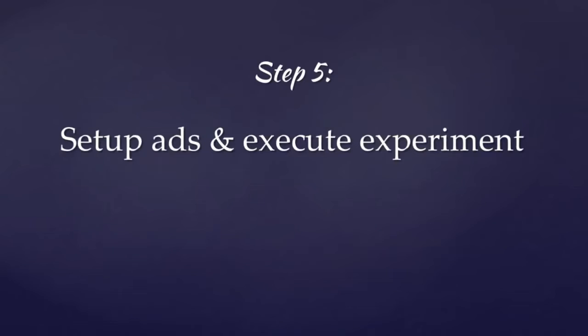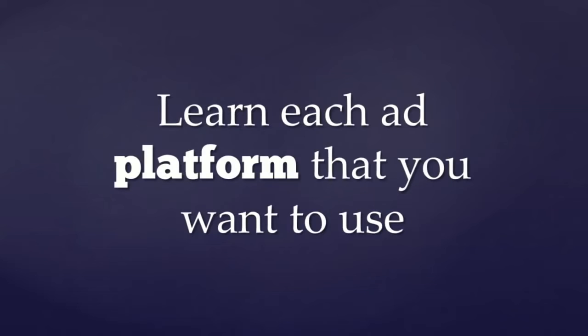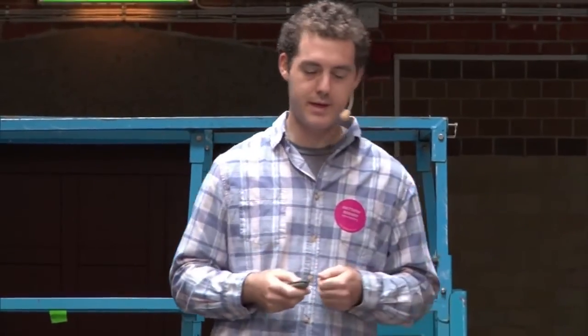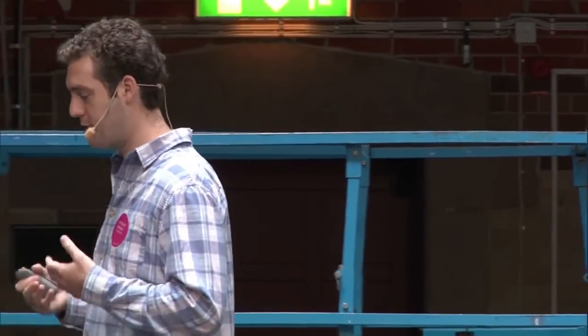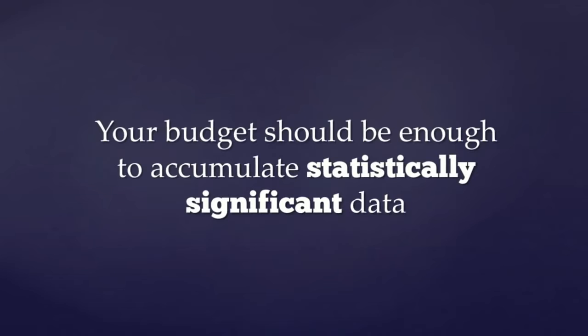Step five: set up your ads and execute the experiment. You need to learn each ad platform you want to use — Facebook, Google, and others are all very different in terms of ad formats, image sizes, and targeting criteria, but they are pretty straightforward. A question I get frequently is: how much budget should I spend on my experiment? The answer is you need enough budget to acquire statistically significant data, meaning that a few more clicks or conversions wouldn't significantly change the results.